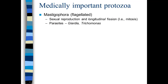Here are some medically important protozoa — mastigophora. They have flagella and reproduce sexually and via mitosis. This includes Giardia, which you get from drinking contaminated water in the wild — it's transmitted through animal feces. And trichomonas, which is transmitted through sexual contact. It's not technically a sexually transmitted disease; sexual contact is one way it can be transmitted, but there are ways you can get trichomonas without sexual contact.